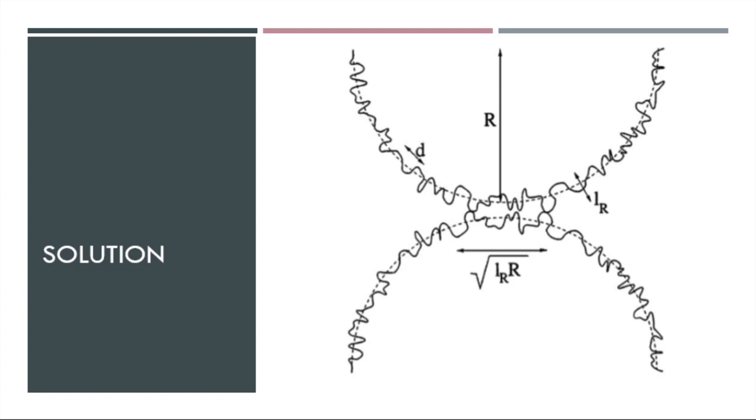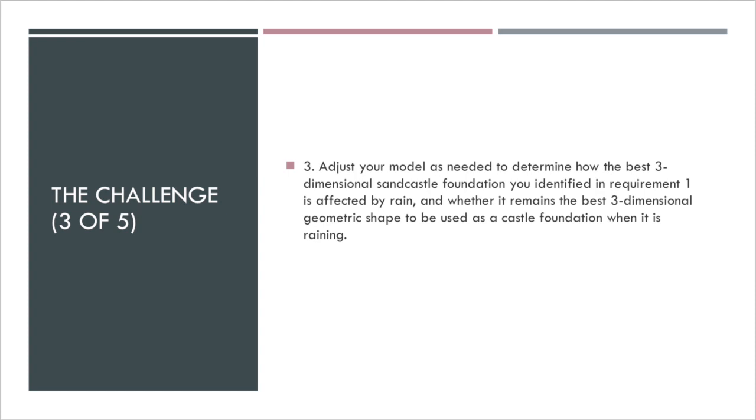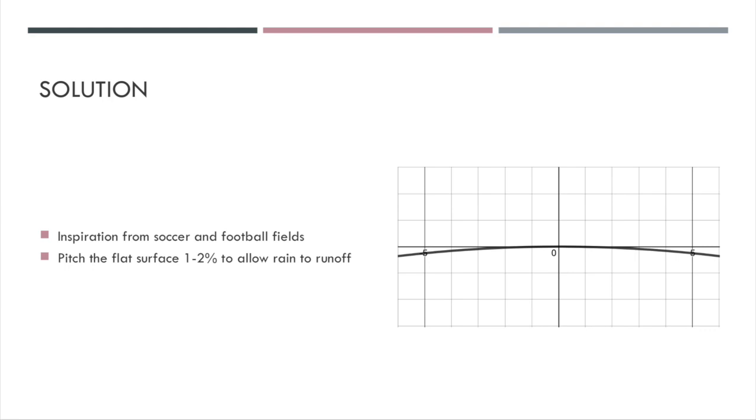Next up, Joseph will discuss about the third issue. The third part of the problem we had was to adjust the model in case of rain. As we briefly mentioned earlier, we chose to model the rain particles in the same way as the waves. That is, the water molecules are basically tiny spheres that only really experience gravity and maybe a little friction. We decided that for the most part our solution could remain the same, but in order to increase the runoff of the flat upper surfaces, we decided to pitch the surface a little bit taking inspiration from soccer and football fields. Next, Matt will talk a little bit more about the last parts of this challenge.